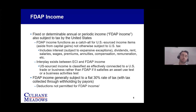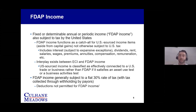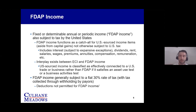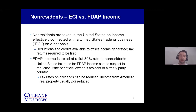FDAP income, conversely, is subject to a flat 30% rate of tax under statutory provisions that can be reduced under income tax treaties. Tax is collected through withholding by payors. For FDAP income, deductions and credits are not available to offset your FDAP income. This creates a great preference — particularly with real estate where you're producing significant expenses to generate income — for income to be categorized as effectively connected rather than FDAP.